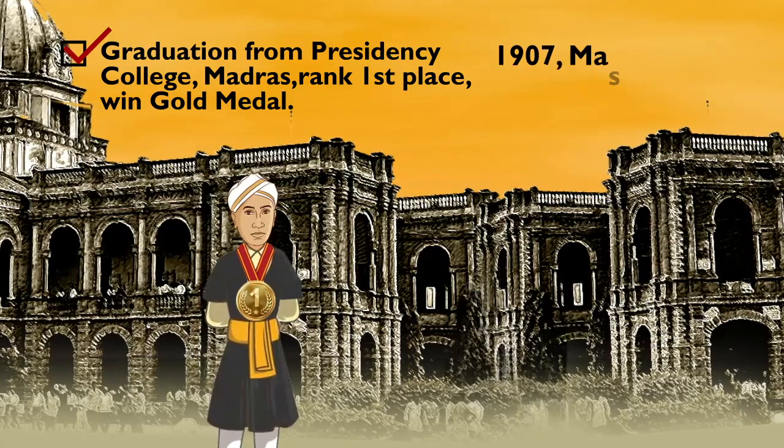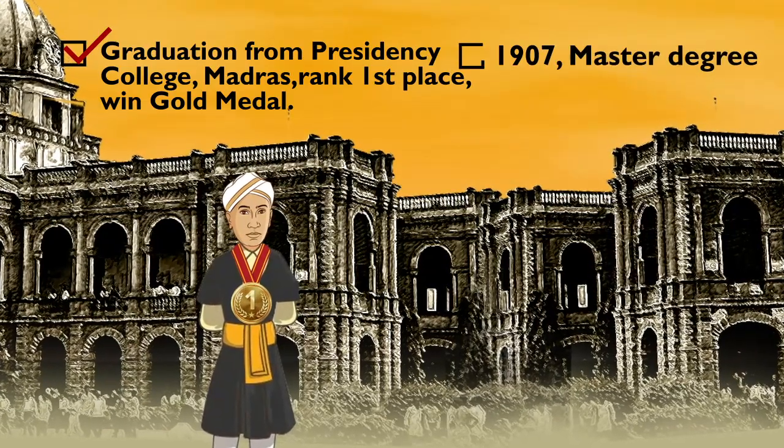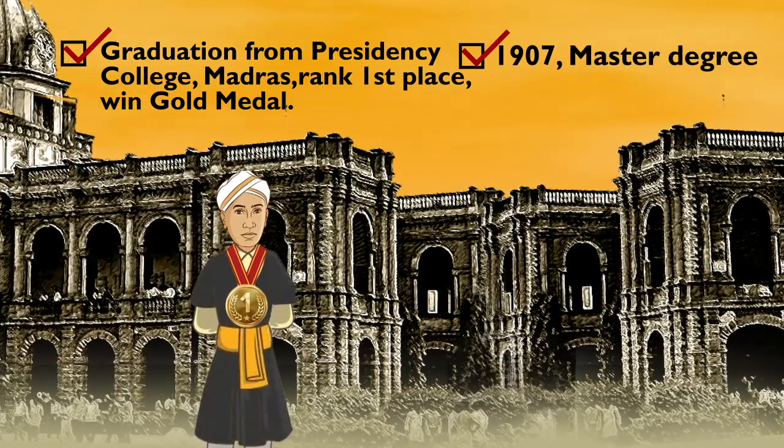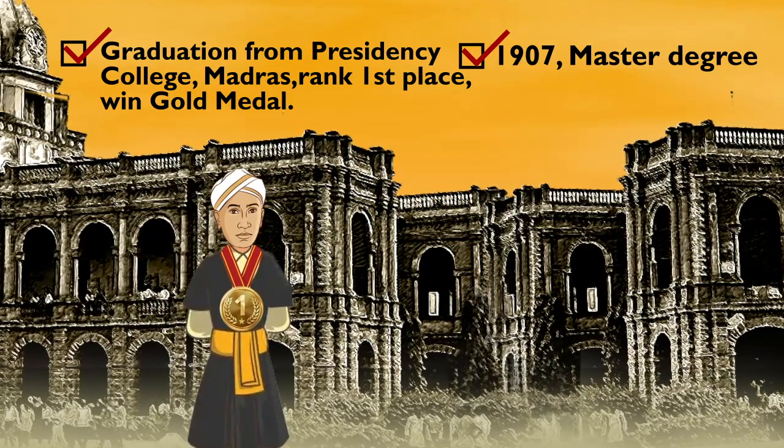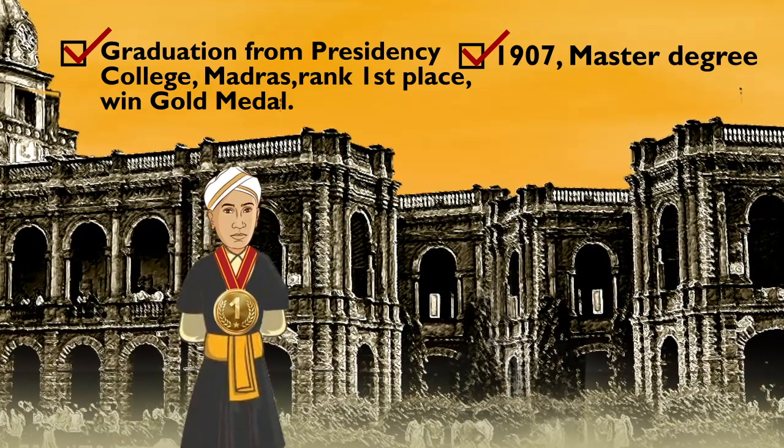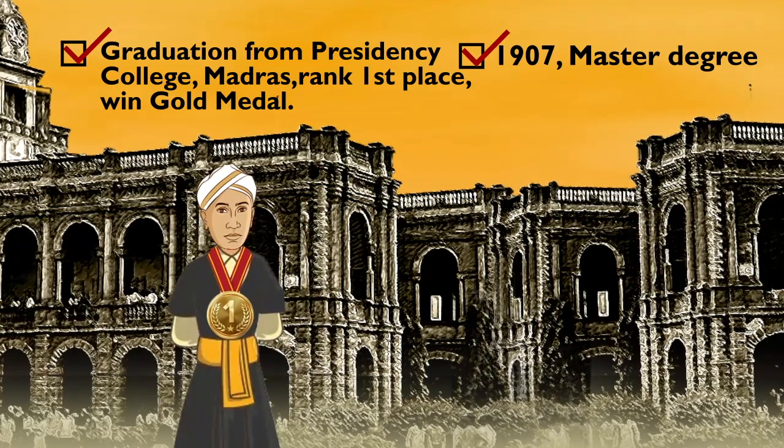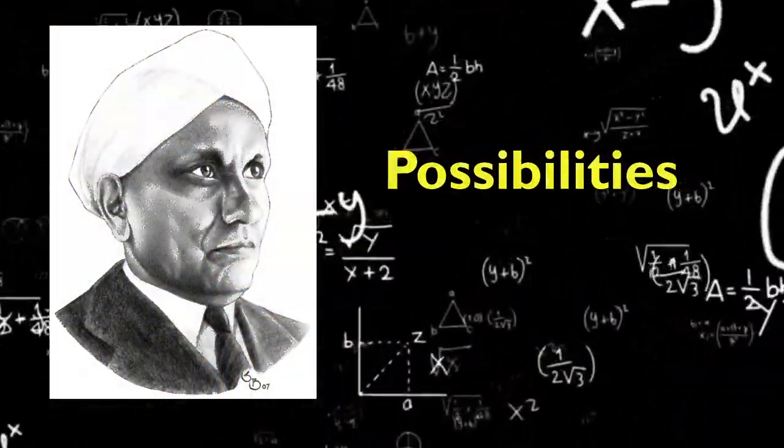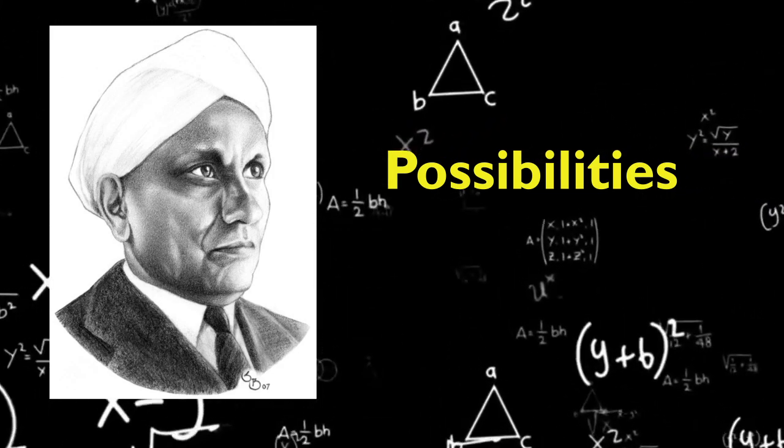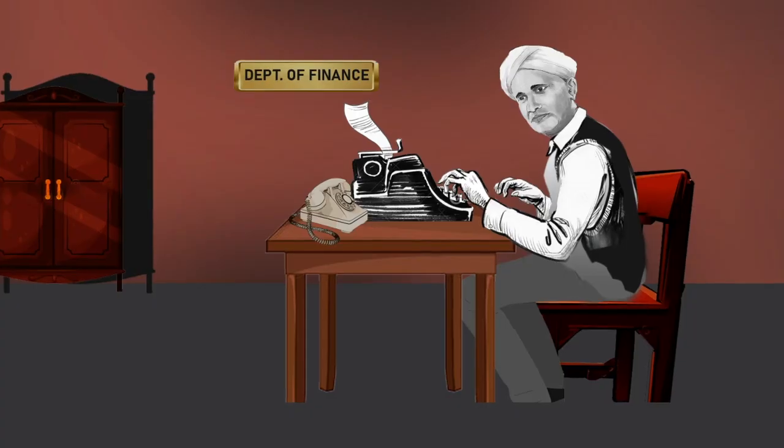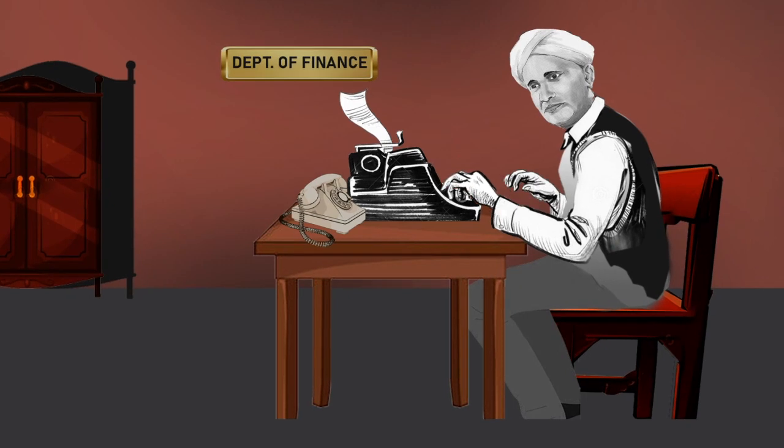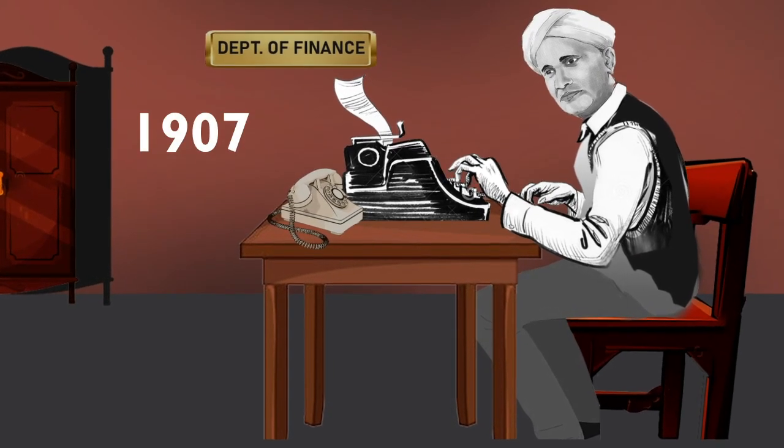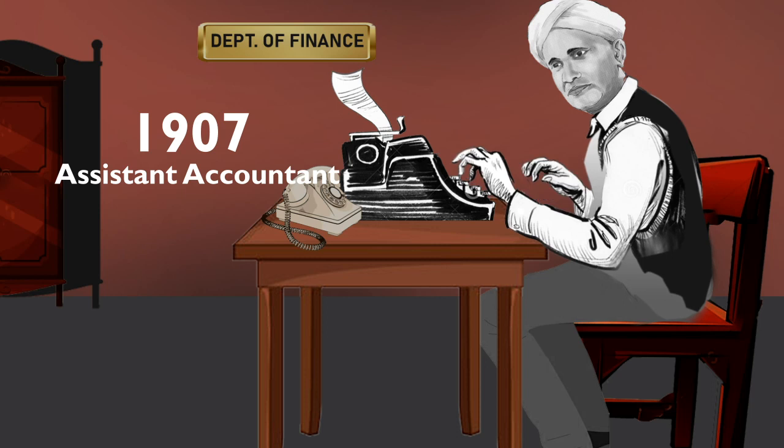In 1907, he gained his master's degree obtaining the highest distinctions. Since at that time a scientific career did not appear to present the best possibilities, Raman joined the Indian Finance Department in 1907 as an assistant accountant at Kolkata.